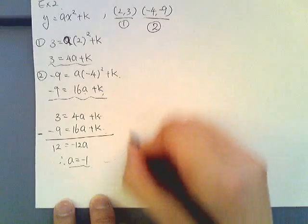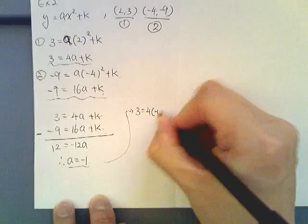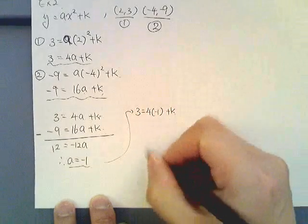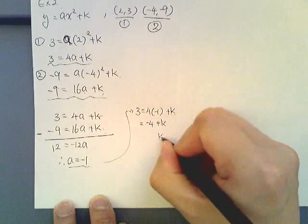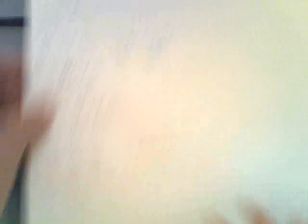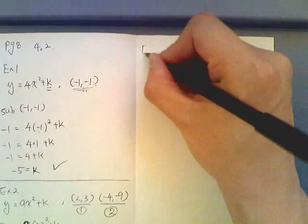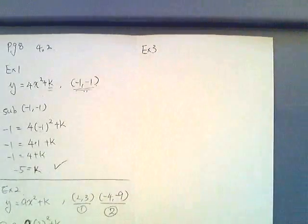Now once I find what the a is, I simply substitute this back into one of these two equations. So then I get 3 equals 4 negative 1 plus k, so then I have negative 4 plus k. K will be 7. So we have found all these two points.